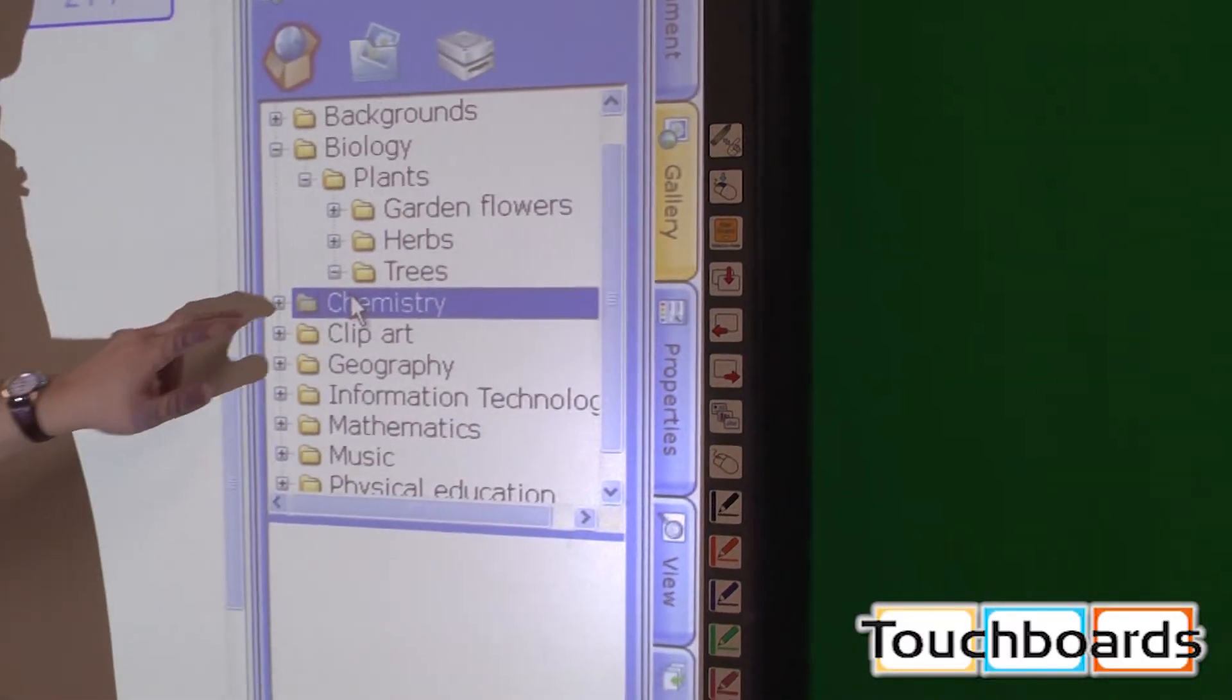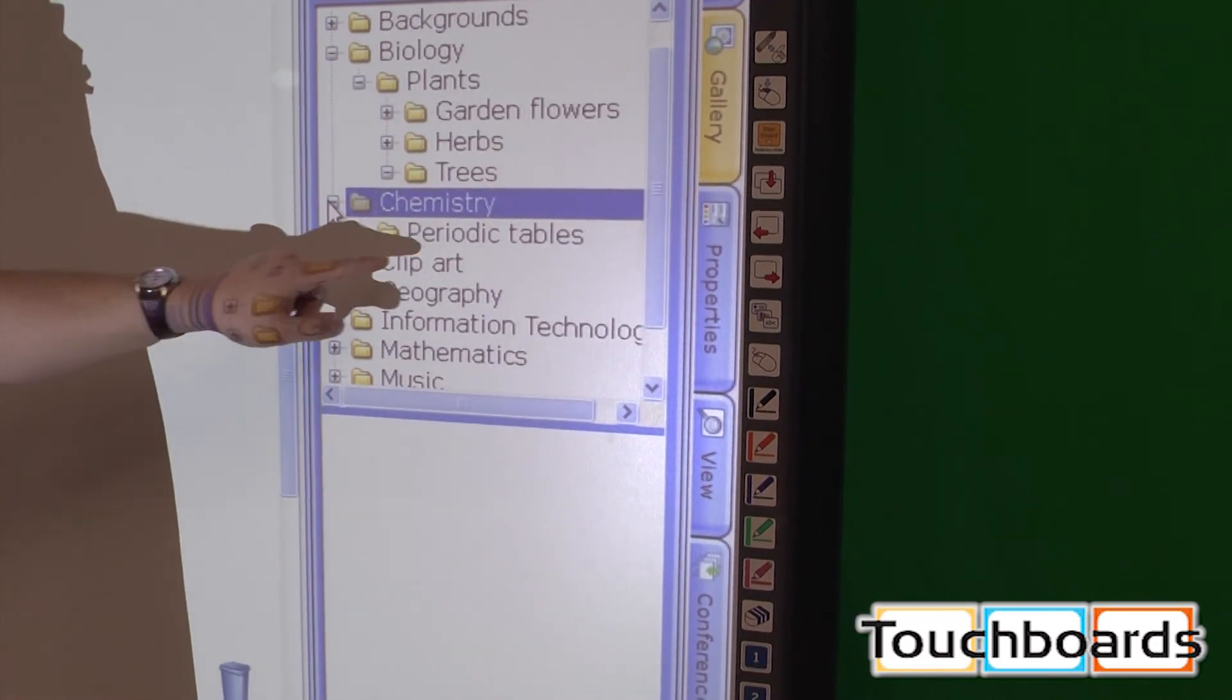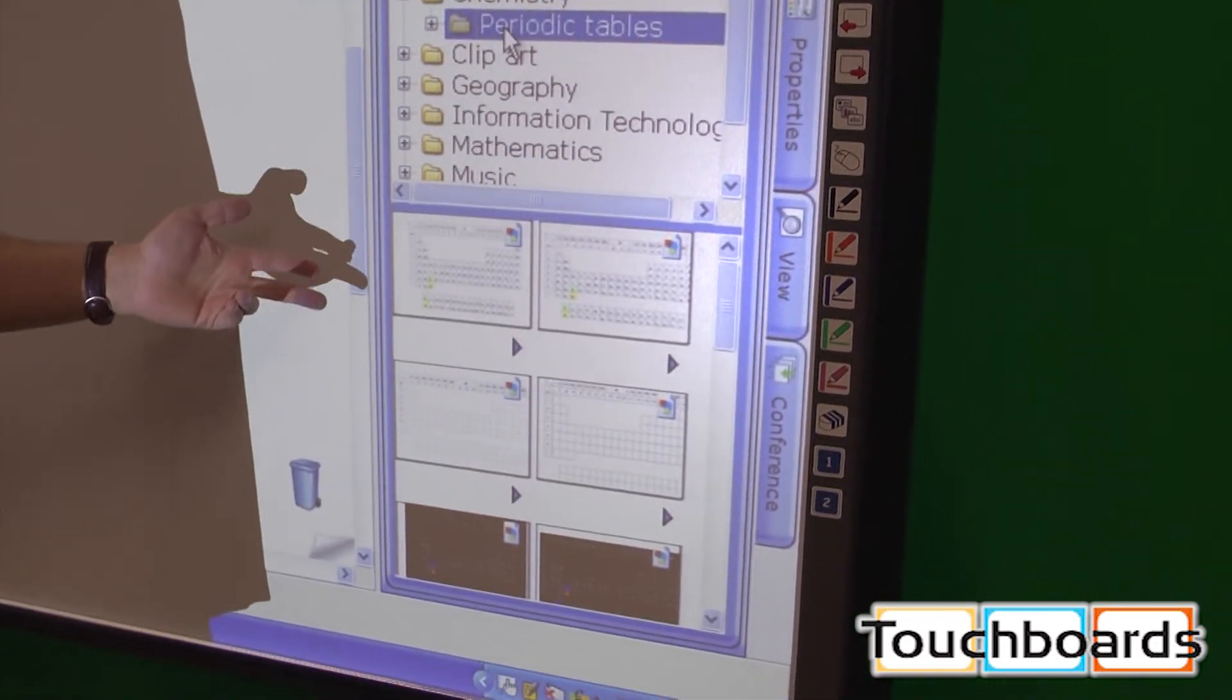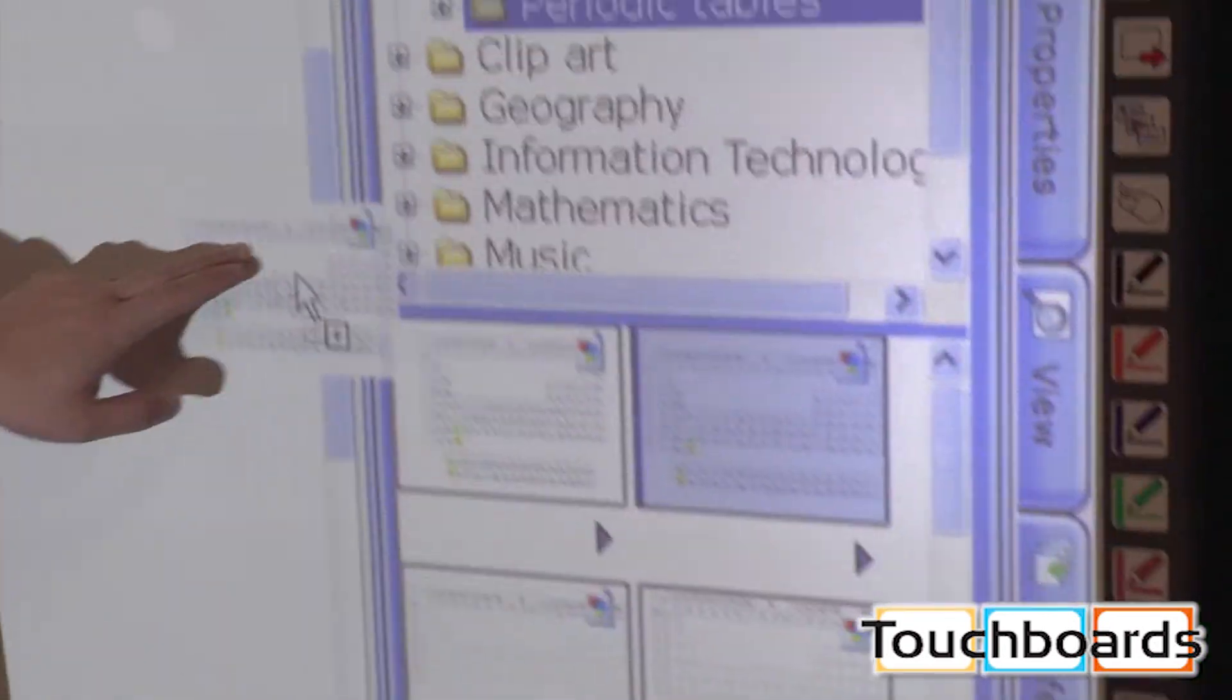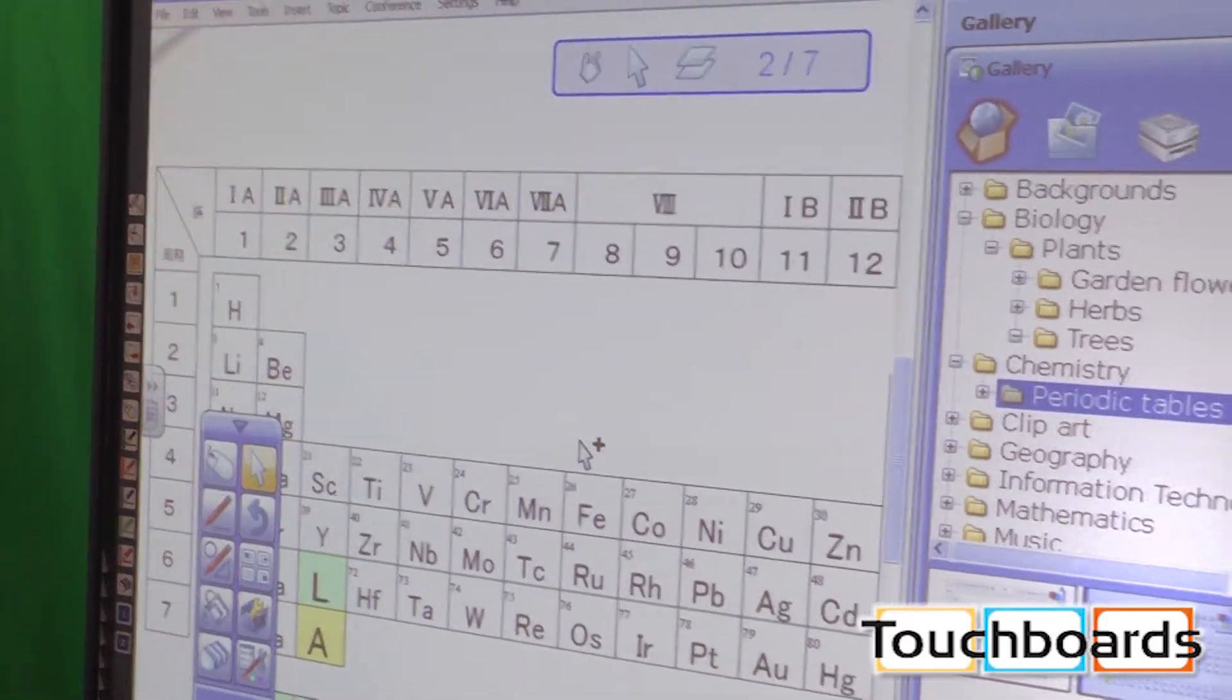We've got some chemistry clip art. Open that up. We have a periodic table. This is great for chemistry class. We just drag it into our page here, and there's the periodic table.